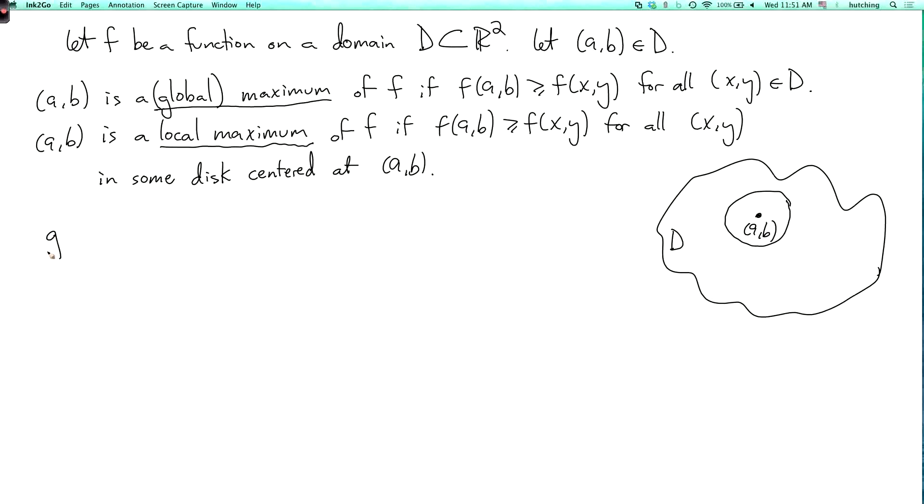And then global minimum and local minimum are defined the same way with the inequality going the other way. So you have f(a,b) is less than or equal to f(x,y) for all (x,y) in the whole domain if we're talking about a global minimum, and just in some disk centered about (a,b) if we're talking about a local minimum.